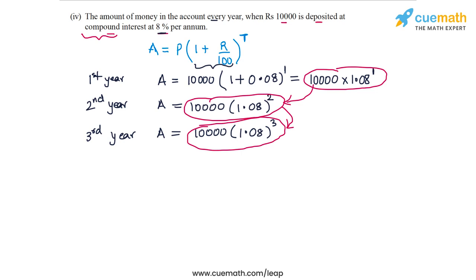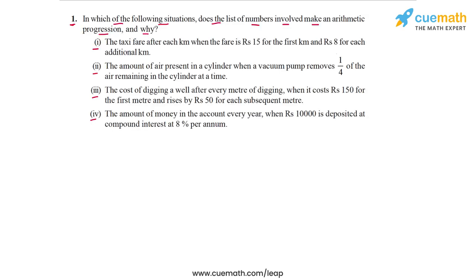That solves part 4. Let's summarize the four answers: In part 1, the taxi fare situation, we got an AP. In part 2, the amount of air present, we did not get an AP. In part 3, the cost of digging a well, we got an AP. And in part 4, the compound interest situation, we did not get an AP.